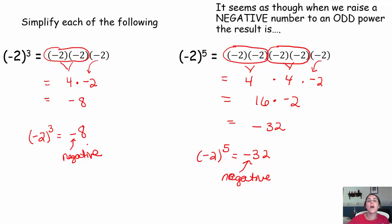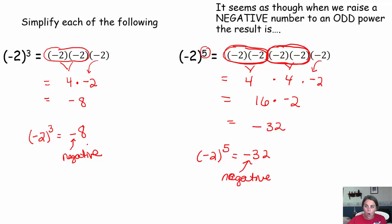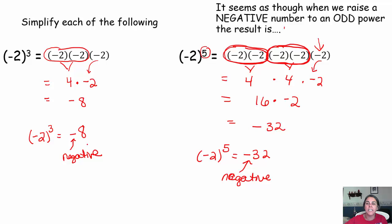I just want you to notice why I pair up factors. Because I know a negative times a negative is a positive — every pair of negative factors, when I group two negative factors together and multiply, I get a positive. The issue with odd exponents is: although I nicely get pairs of negative times negative as a positive, you're always going to have an extra negative factor running along at the end. So if you have a negative base raised to an odd power, the result will always be negative.